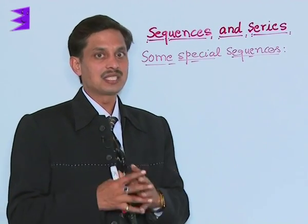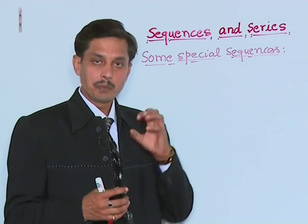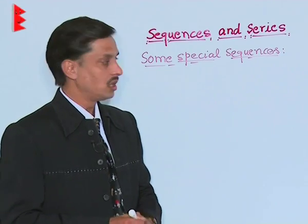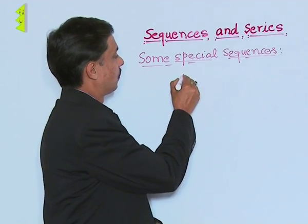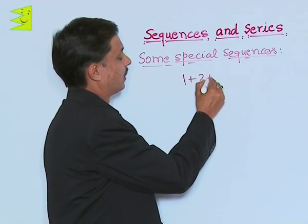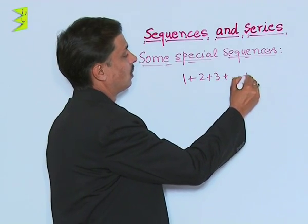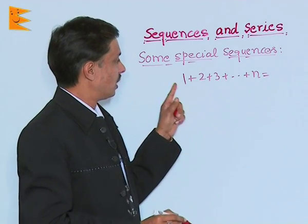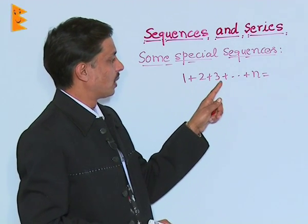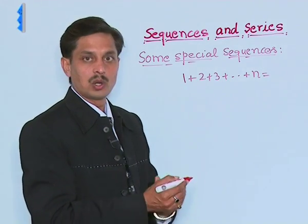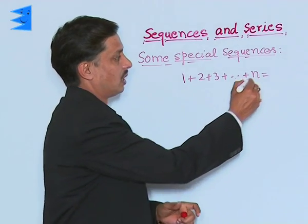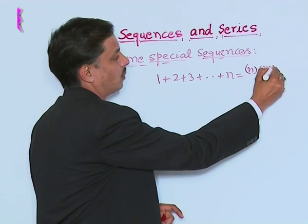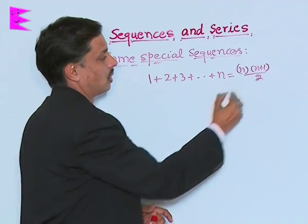These special sequences are based on three special results. The first one is how to find the sum of first n natural numbers. That is 1 plus 2 plus 3 plus 4 dot dot dot plus up to n. Their sum is given by n into n plus 1 upon 2.